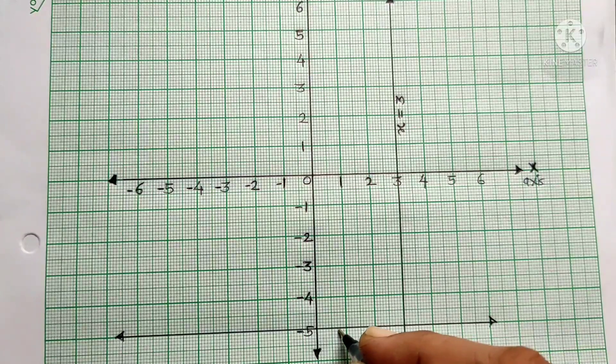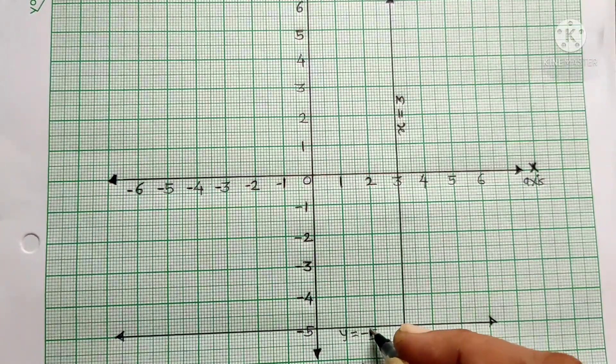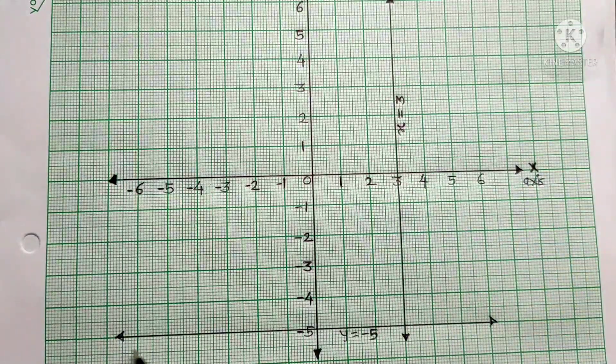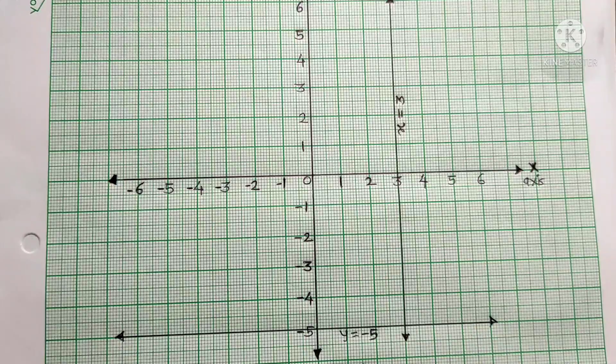Now y equals minus 5, which is a horizontal line.